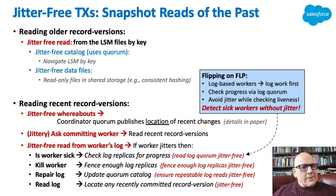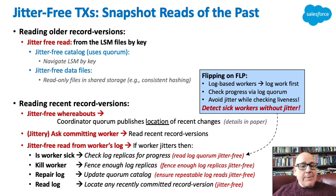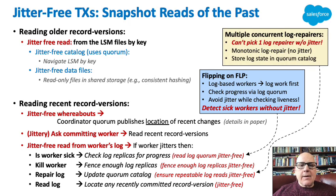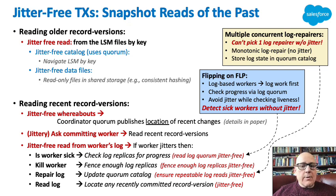This has an interesting property — it's flipping FLP. Fischer-Lynch-Paterson says you can't tell the difference between a slow and a sick server in an asynchronous network in bounded time. But it turns out if servers are logging and you can look at a quorum of the log in bounded time, you can tell it's sick quickly. I also cannot pick a single log repair because picking one server requires consensus, so we must do concurrent log repair with monotonic changes, storing them in a quorum catalog.